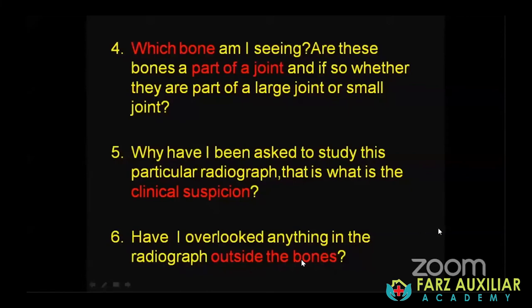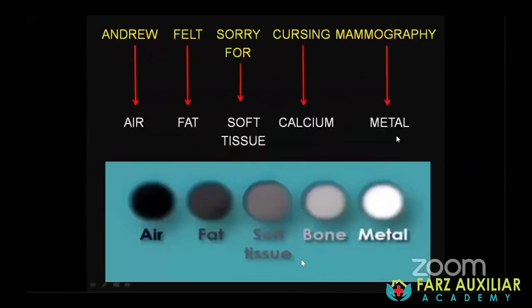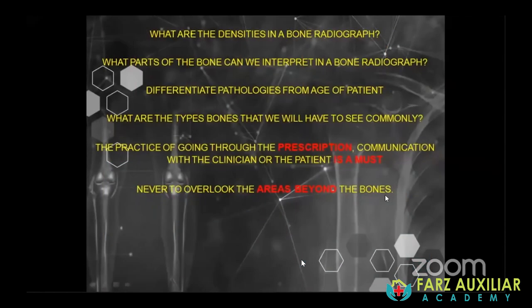For exam-going students: when an x-ray is placed in front of you, don't just say 'x-ray shoulder.' We are dealing with a radiograph or x-ray film, not just the x-ray itself — x-ray is ionizing radiation passing through the body, so use the terms radiograph or x-ray film. Coming to number one — the density pattern in a bone radiograph: from least to most dense, it is air, fat, soft tissue, calcium, and metal. Please write a clinically pertinent report that stands apart from your colleagues.